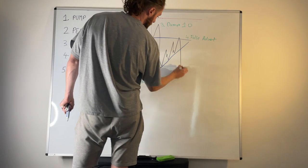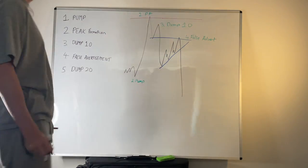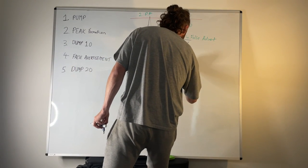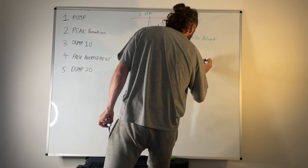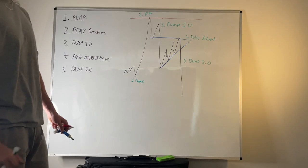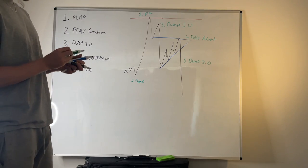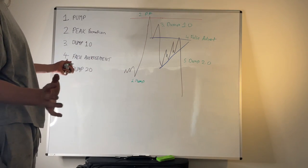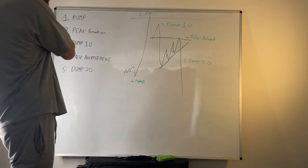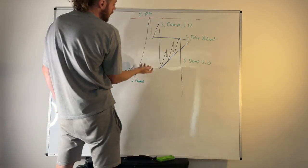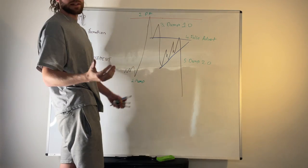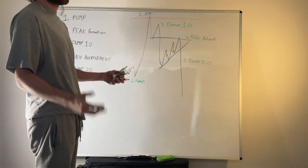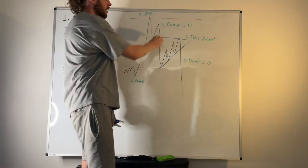We're getting higher highs, higher lows. What happens then? Everybody starts buying again just in time for final stage, which is dump 2.0. This is still our target. Stage five, dump 2.0. The beautiful thing about this is by categorizing these stages, we remove all ambiguity. We're not wondering what's going on. We know which stage we're at in the market.